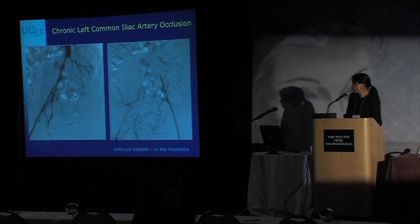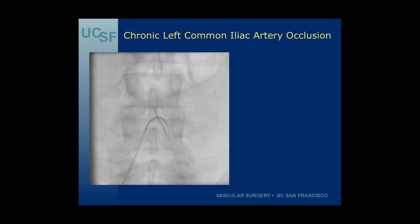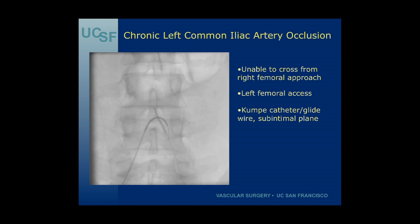This is a fairly straightforward case — a chronic left common iliac artery occlusion. Because there is a stump of the proximal left common iliac artery, this was initially approached through a right femoral approach. We were unable to cross from a right femoral approach, so we obtained left femoral artery access under ultrasound guidance.